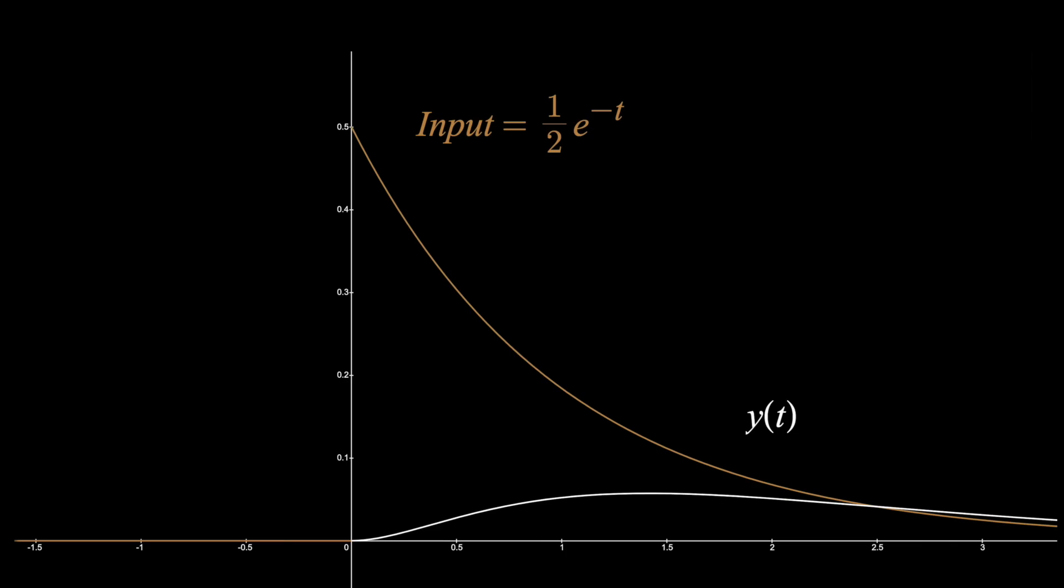And that's everything. But notice that we don't really know anything about the system. I told you the block has a mass of one kilogram, but we don't know the spring constant, we don't know the coefficient of friction, and we didn't need to know them. That's the power of the impulse response.